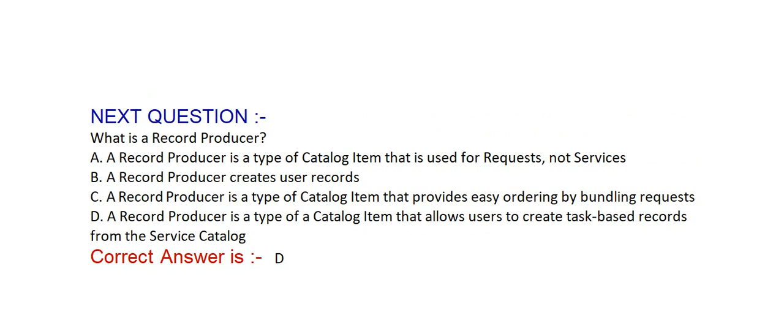What is a record producer? Option A: a record producer is a type of catalog item that is used for requests, not services. Option B: a record producer creates user records. Option C: a record producer is a type of catalog item that provides easy ordering by bundling requests. Option D: a record producer is a type of catalog item that allows users to create task-based records from the service catalog. Correct answer is option D.